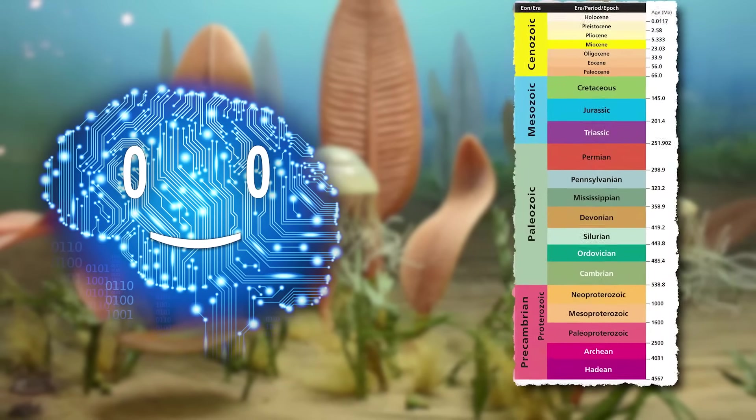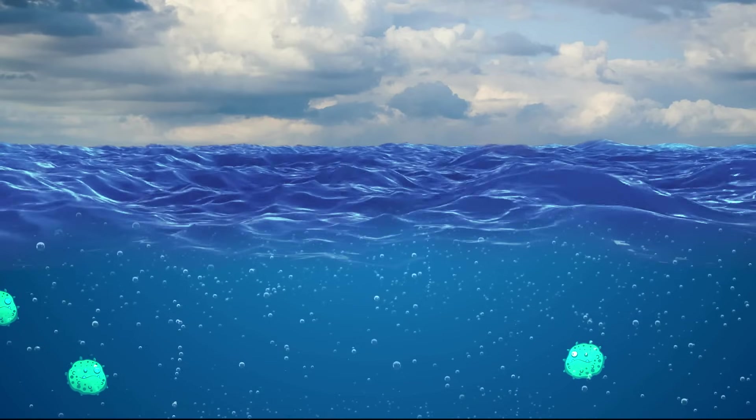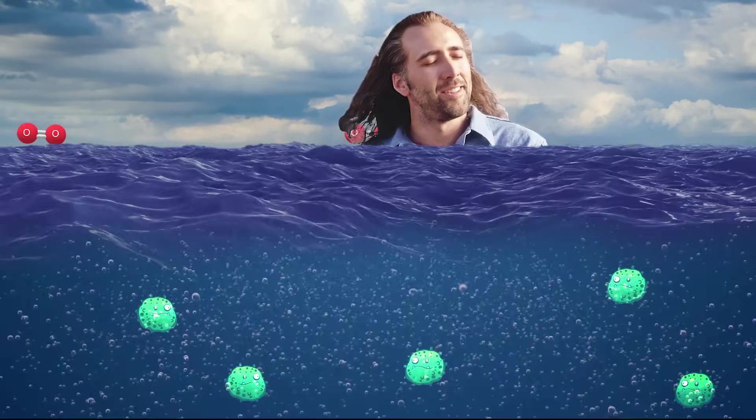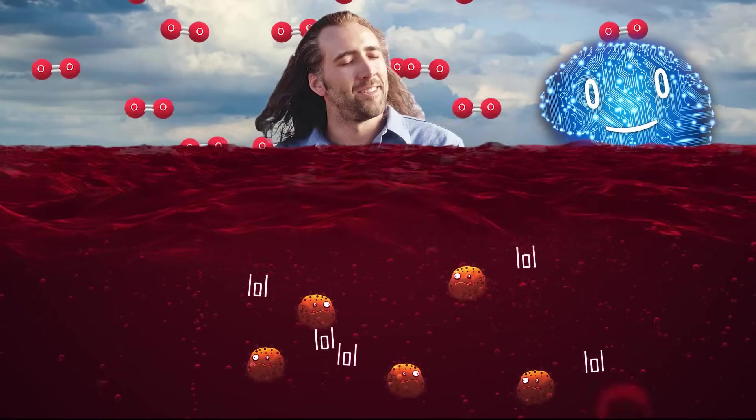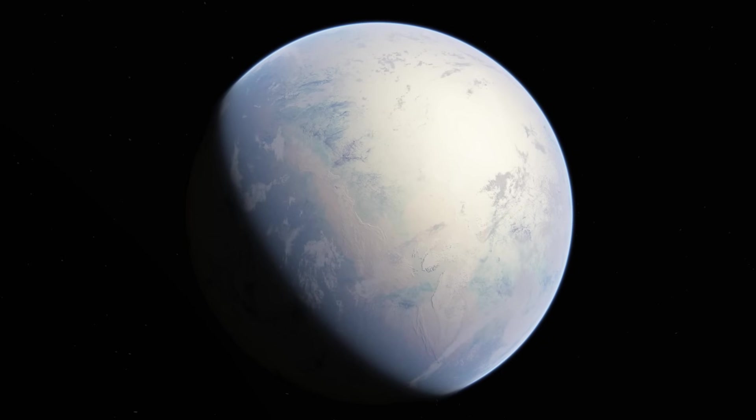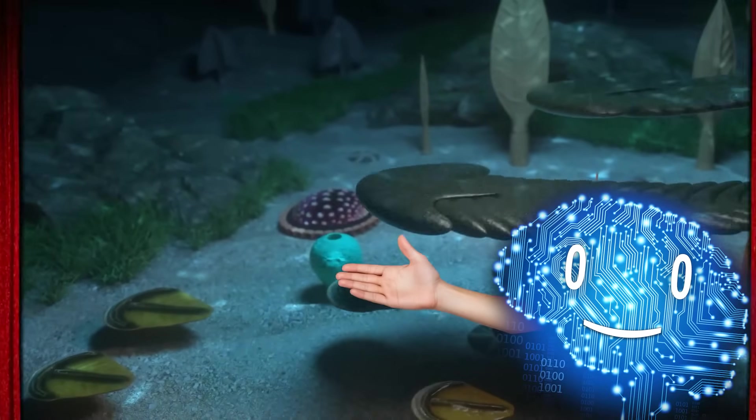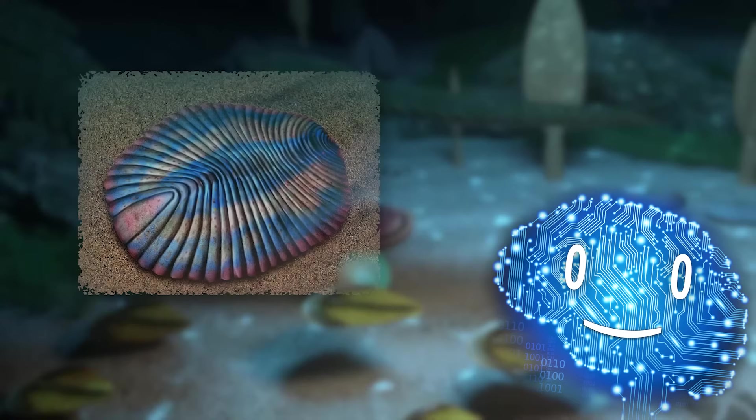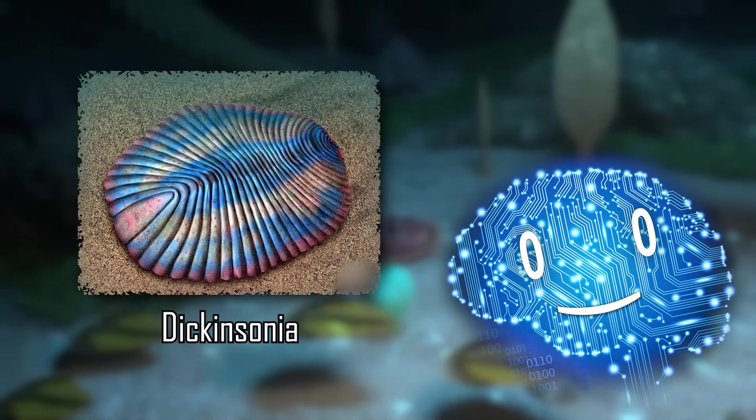For the next 2 billion years, the Proterozoic Eon took place, in which we got breathable air that killed most of the life at the time, thanks cyanobacteria. We got several periods in which Earth turned into a snowball, and finally, we got our first multicellular organisms, with weird squishy things like the Dickinsonia roaming around.